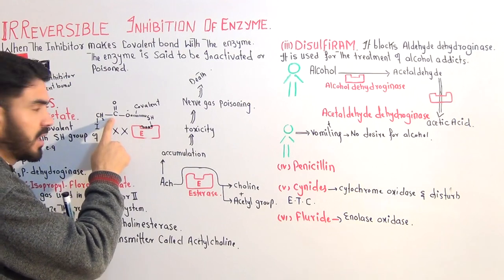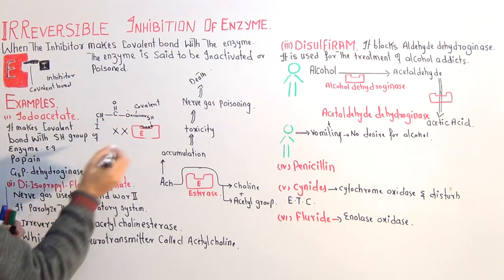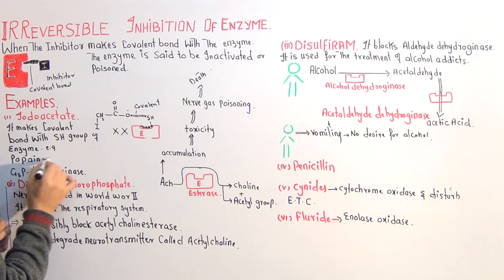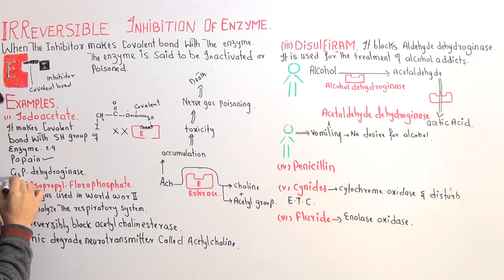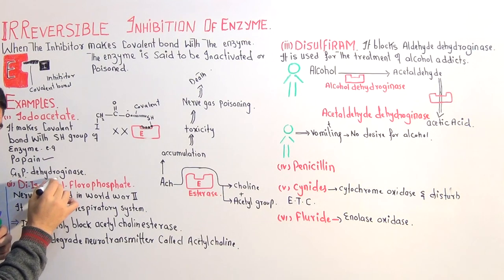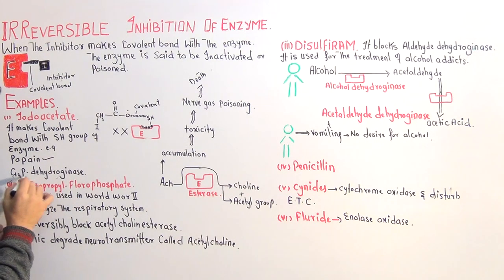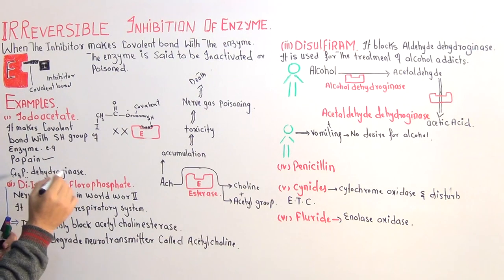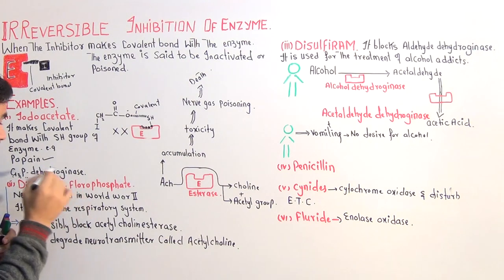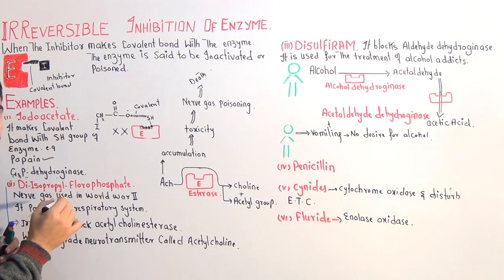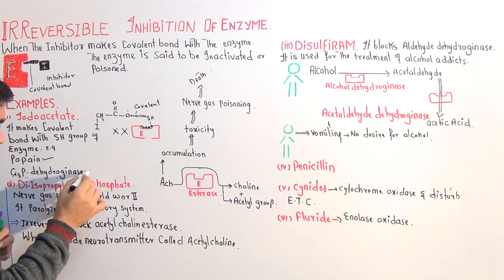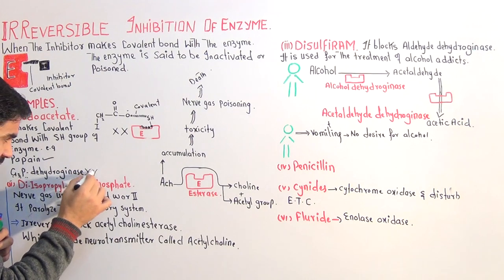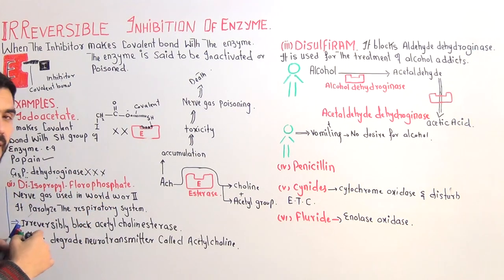The enzymes inhibited by iodoacetate include papain and glyceraldehyde-3-phosphate dehydrogenase (G3PD). You may have heard of G3PD in glycolysis, in the metabolism of carbohydrates and glucose. If you irreversibly stop this enzyme, you can stop the metabolic process inside the human body.